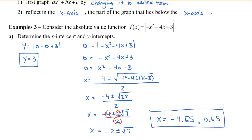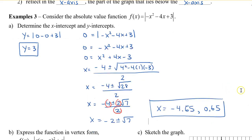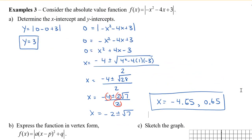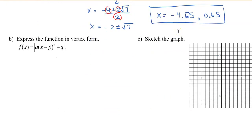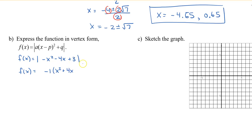So we have these three intercepts, which will help guide us when we're graphing. Now our next step is to take negative x squared minus 4x plus 3 and change it to vertex form. When we're graphing, we don't take away any of the negatives — it is an absolute value function, but that doesn't mean we get rid of anything negative. So we're going to complete the square, and we'll just ignore the absolute values for now and put them in after. We're going to factor out a negative 1 from the first two terms, leaving the last term on the outside of the brackets.